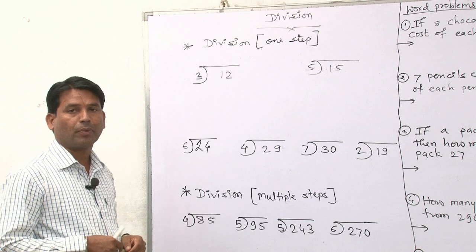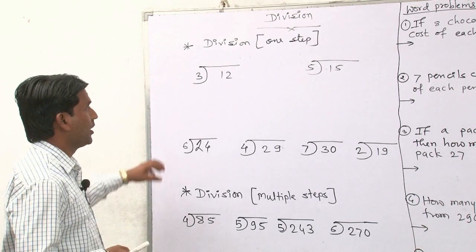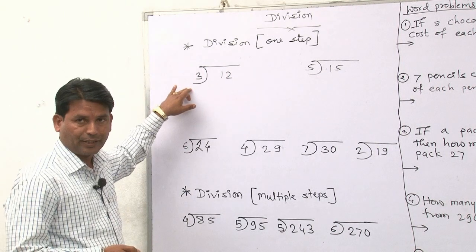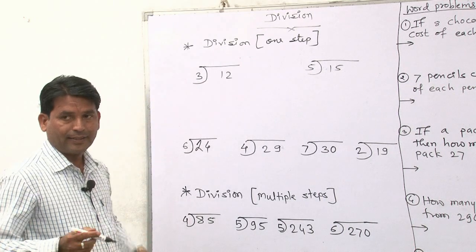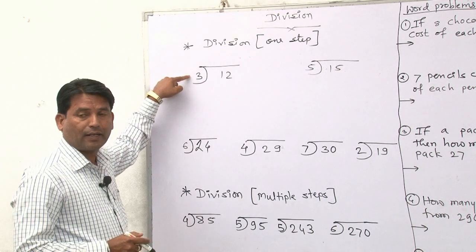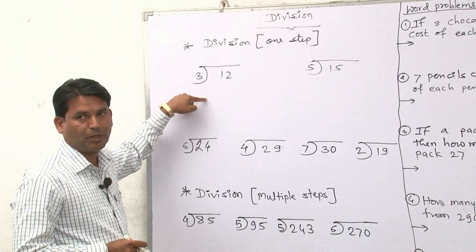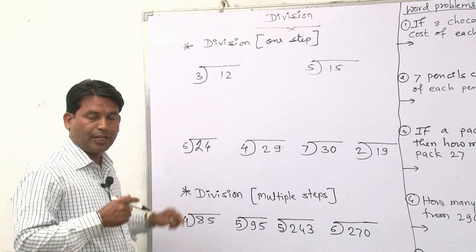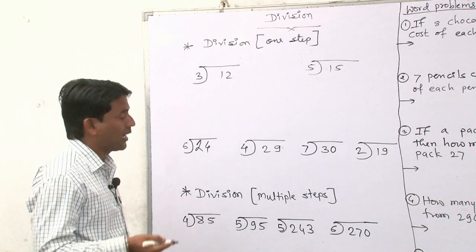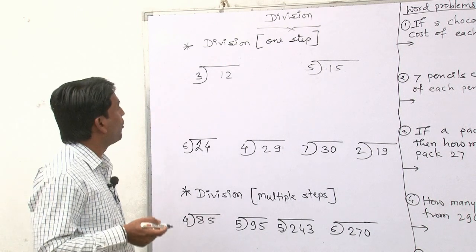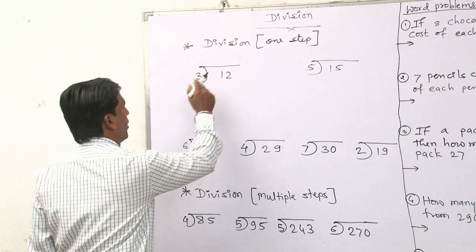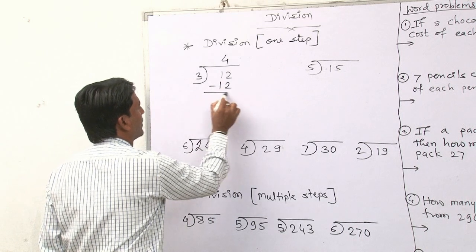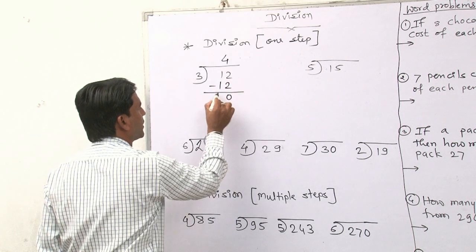I will explain each example one by one. The first one is: what is 12 divided by 3? You can count this table — 3 to the 6, 3 to the 9, 3 to the 12. So 4 times counting the 3 table gives us 12. I will write here like this: 2 minus 2 is 0, 1 minus 1 is 0.